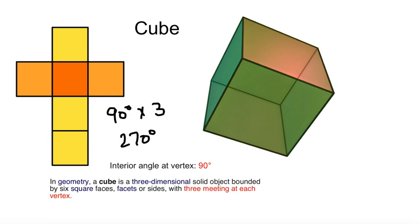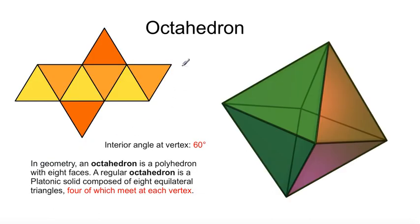An octahedron. In geometry, an octahedron is a polyhedron with eight faces. If we count those out, you'll see eight. A regular octahedron is a Platonic solid composed of eight equilateral triangles, not quadrilateral. Equilateral triangles, four of which meet at each vertex.